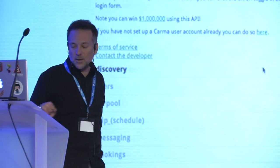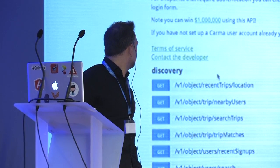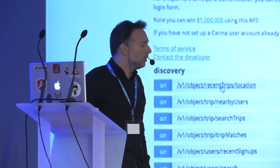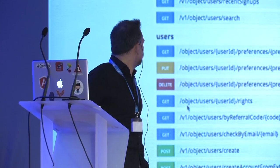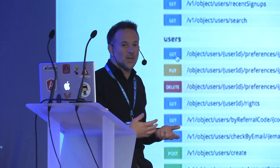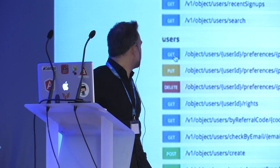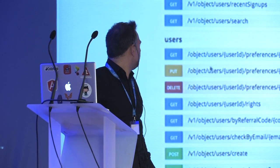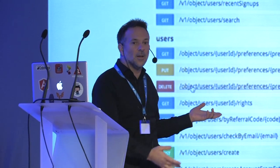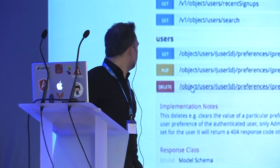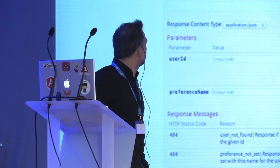In the Swagger documentation you can click on Discovery and see all the endpoints you can call. If you click on Users, you can see the HTTP verb and action — for example, GET to get preferences for a user, PUT to update preferences, or DELETE to remove preferences. Everything is documented; clicking on any endpoint shows the complete documentation. I'm going to try to call a couple of APIs live.